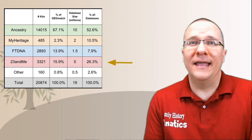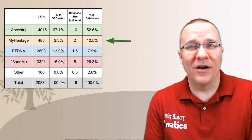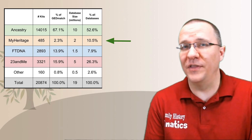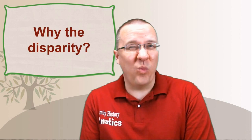23andMe is less represented, and at the very bottom is MyHeritage, which is far below what we'd expect based on their database size. Now, why this disparity?